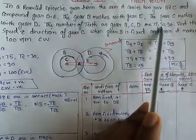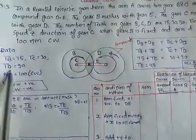The number of teeth on gear B, C and D are 75, 30 and 90. TB is 75, TC is 30 and TD is 90.